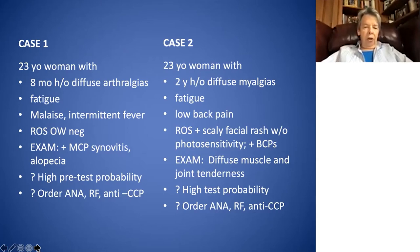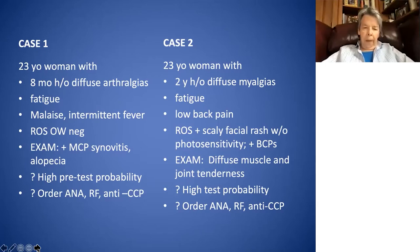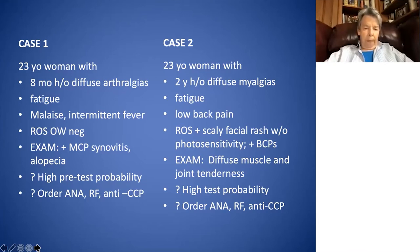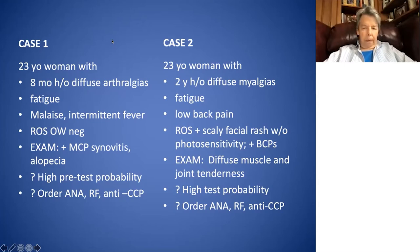The exam of the first patient showed what the observer felt was MCP synovitis and also what appeared to be some generalized frontal thinning. The exam of the second patient showed diffuse muscle and joint tenderness not confined to localized anatomic structures such as joints. I want you to think about these cases in terms of high or low pre-test probability, and whether among other tests you might consider ordering an anti-nuclear antibody, a rheumatoid factor, or other tests such as an anti-CCP. We'll come back to these tests momentarily.